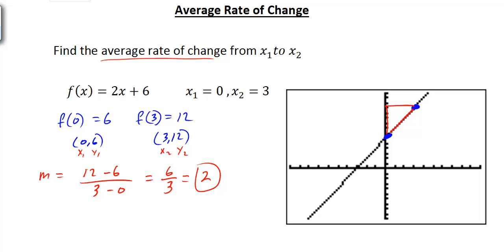Of course, our equation is a straight line. For a straight line, the slope or average rate of change is always going to be the same no matter what two points we pick. In y equals mx plus b, the y-intercept is 6 and the slope m is 2—our rate of change. That means for every time we go 1 to the right, we're going up 2.